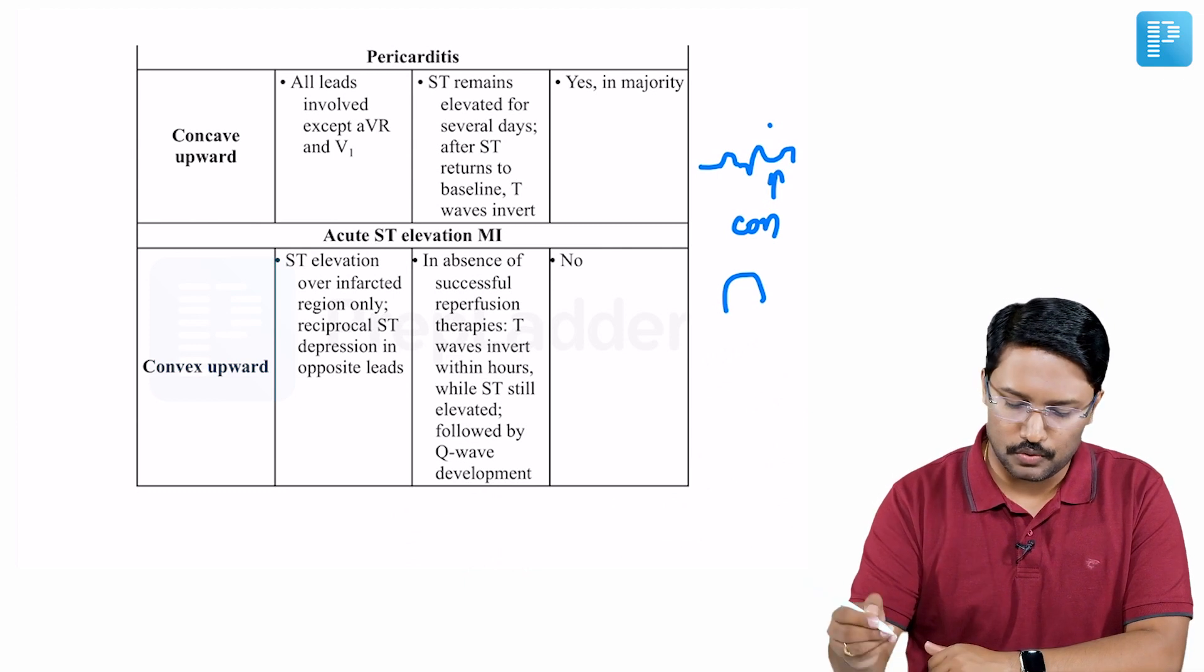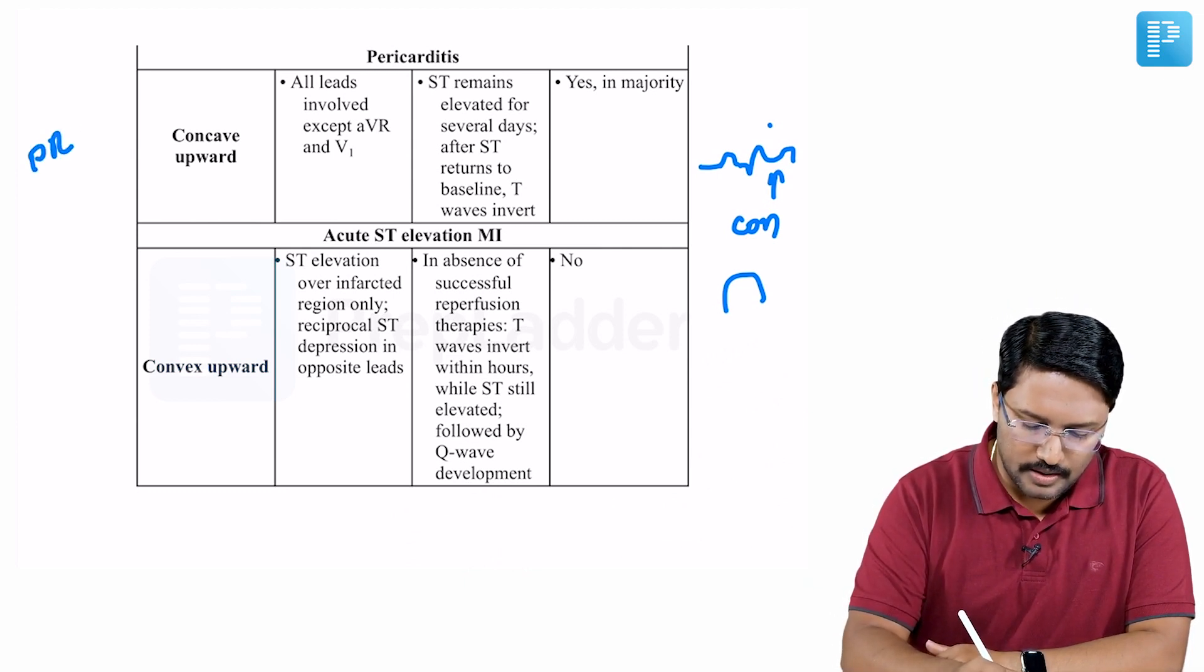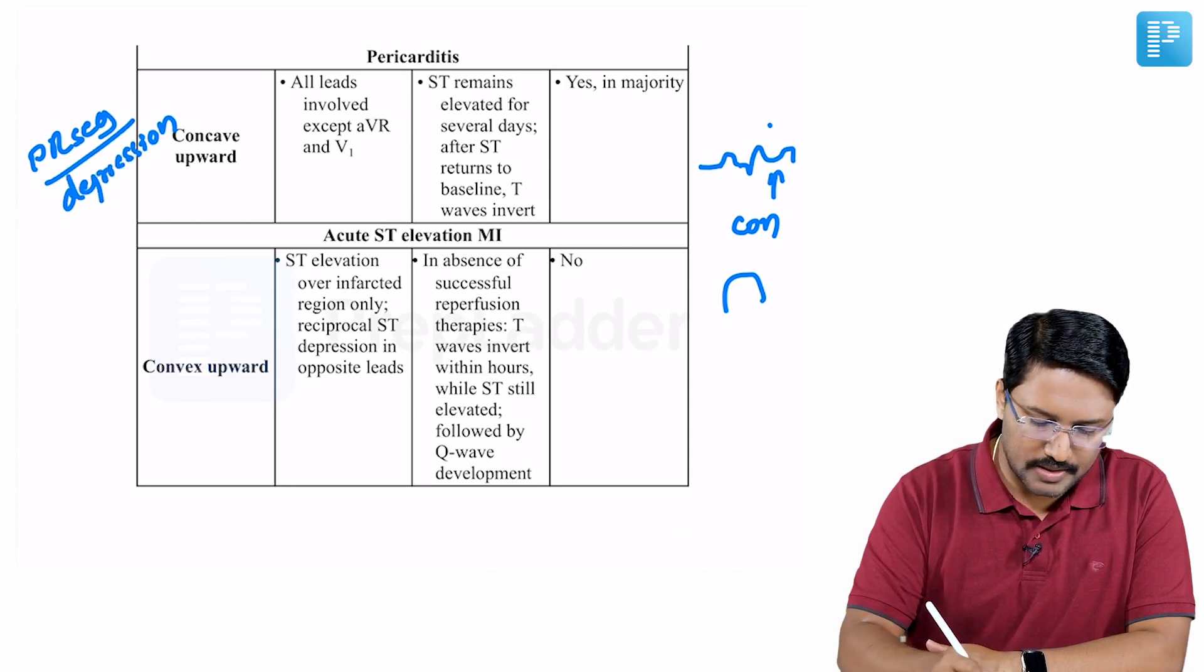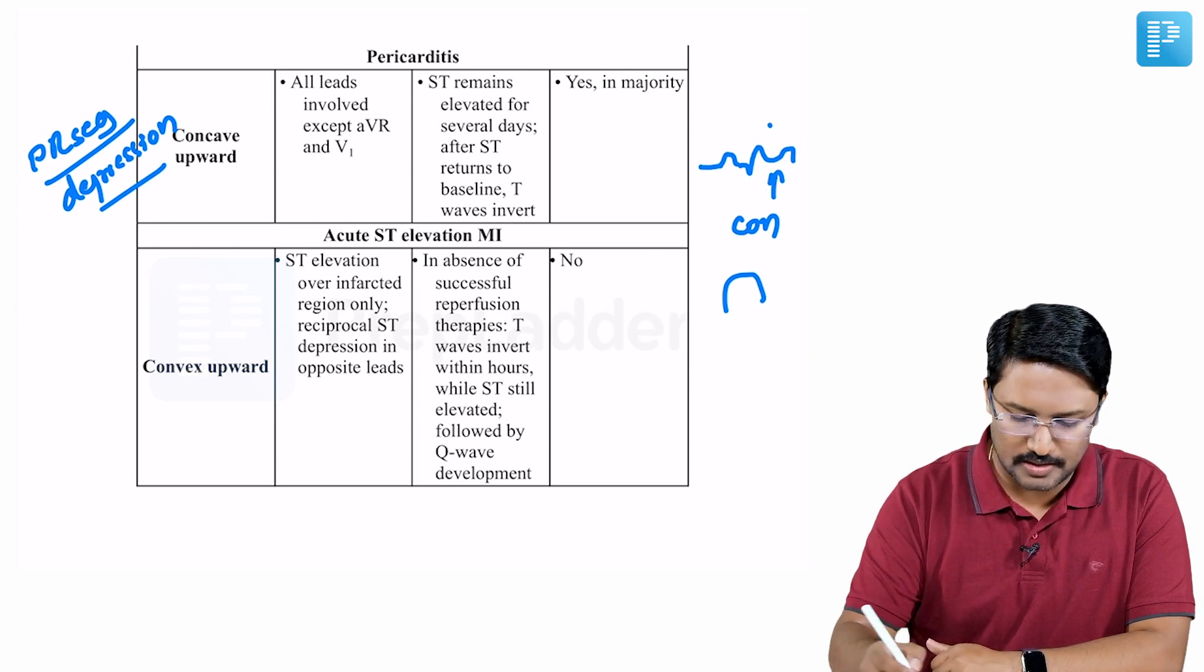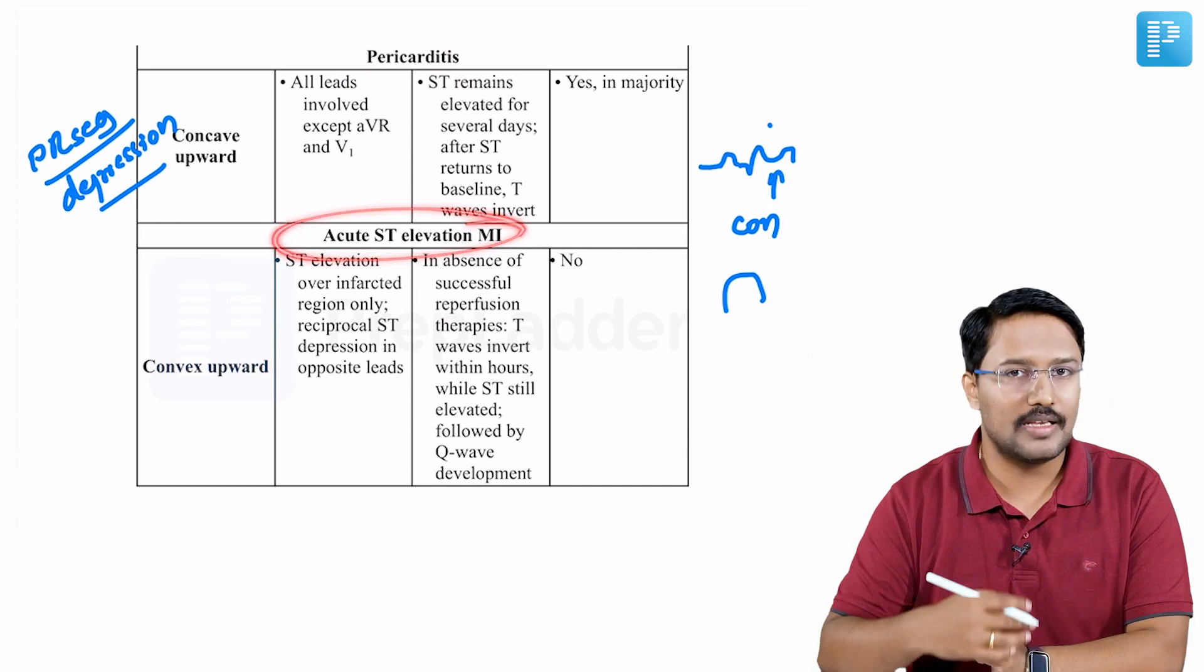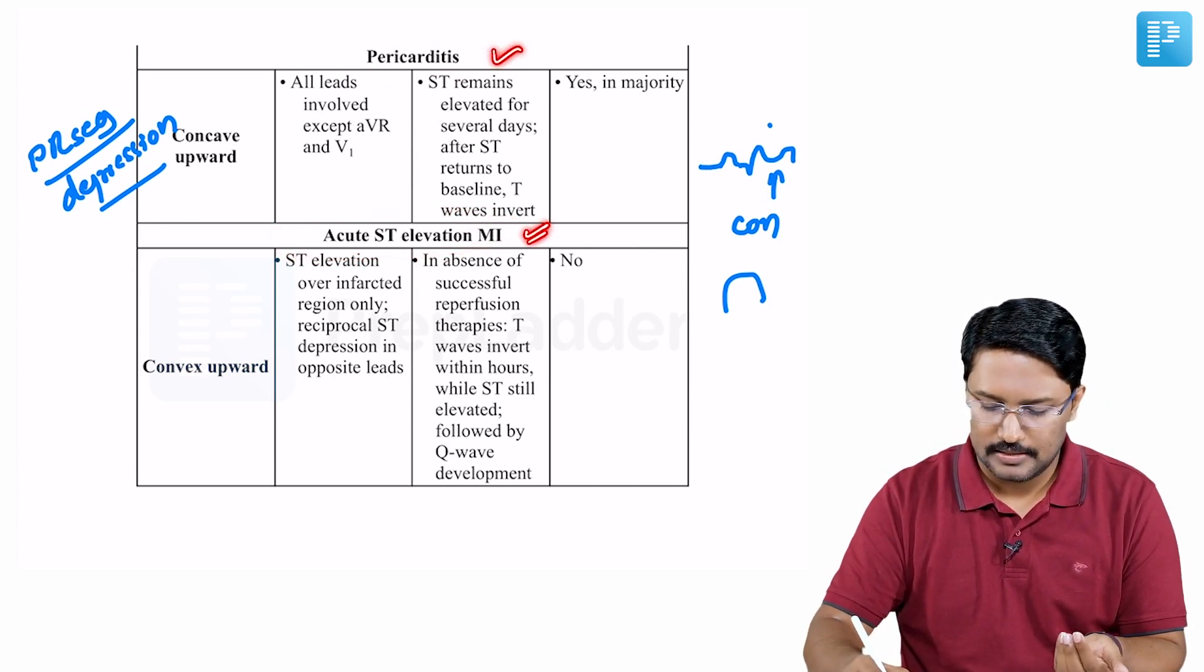The other thing you need to note is in pericarditis, there's also PR segment depression, often TP segment also. That's very typical of pericarditis that you won't see in STEMI. This is how you can quickly learn to differentiate between pericarditis and STEMI.